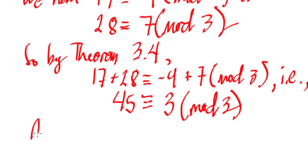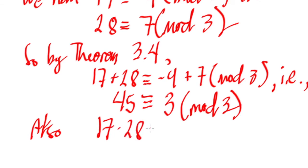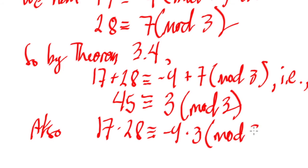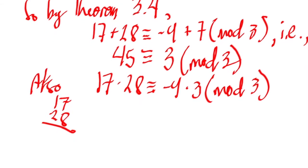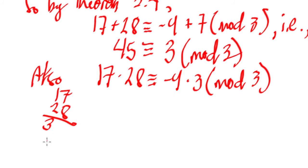Also, applying multiplication by theorem 3.4: 17 times 28 is congruent to negative 4 times 7 mod 3, which gives 476 is congruent to negative 28 mod 3.